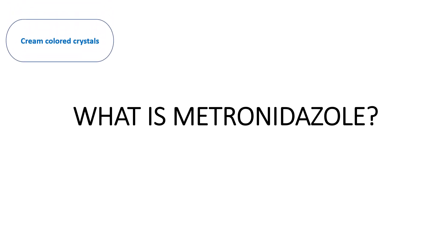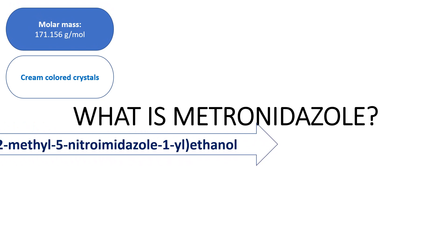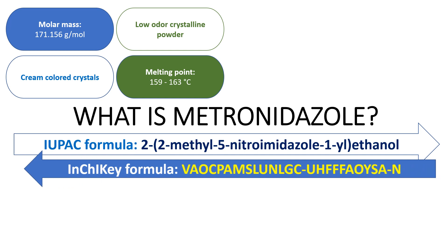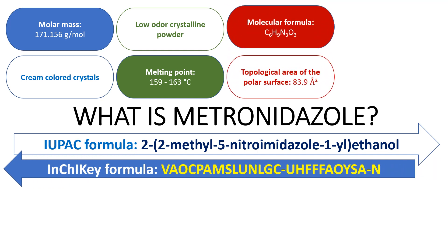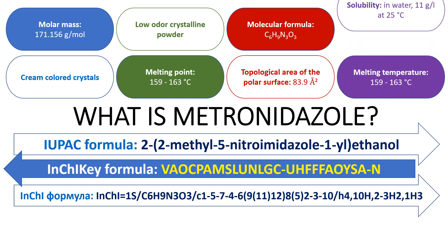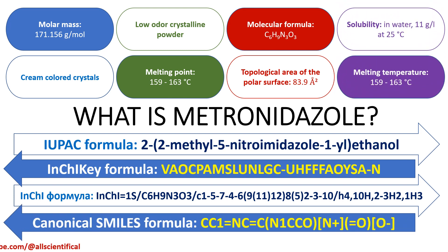Metronidazole consists of pale-colored crystals with a molar mass of 171 g/mol. Its chemical formula is 2-(2-methyl-5-nitroimidazol-1-yl)-ethanol. It is a low-odor crystalline powder with a melting point of 159–163°C.